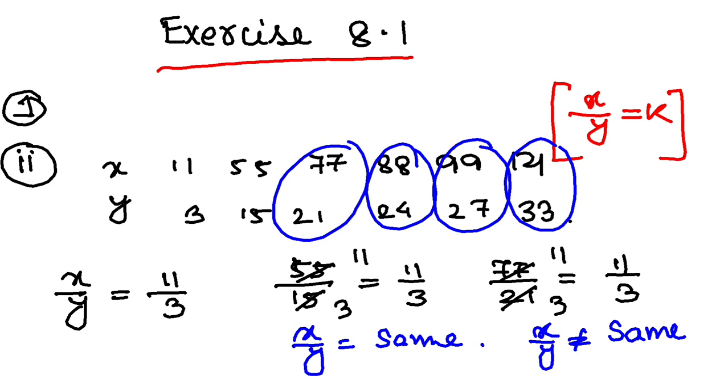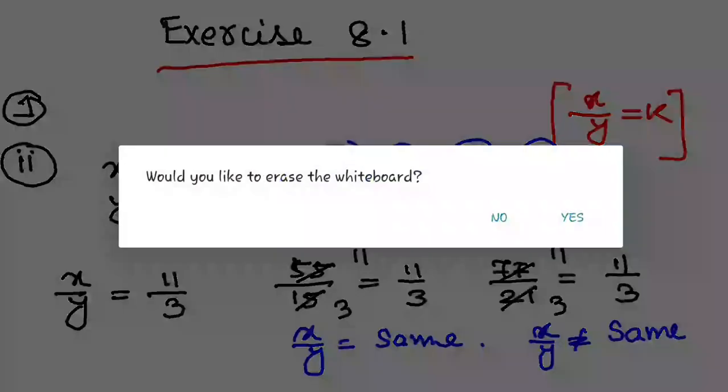Now let us go to question number two. Please read the question: 25 stamps of equal value cost 750 rupees. How many stamps of the same value can be bought for 900 rupees? There are two things here: number of stamps and cost.